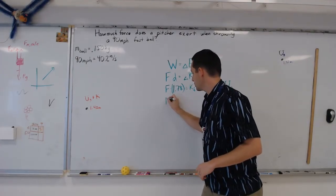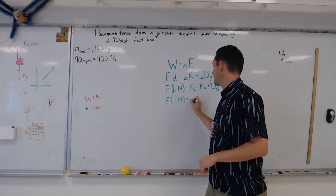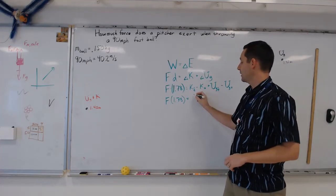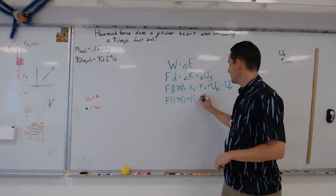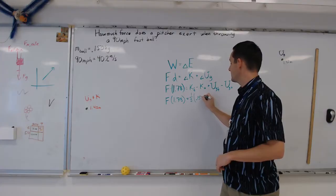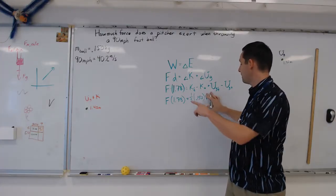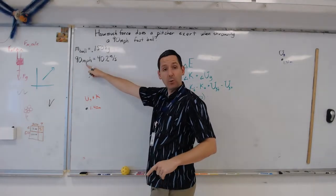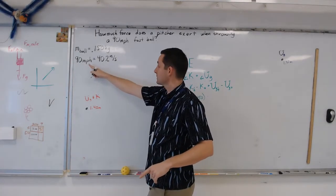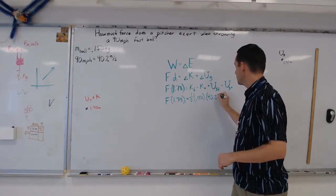We're getting really close. We go force times 1.78 equals kinetic energy final, which would be one-half times the mass, which was given to me. That's the 0.150 times V squared. And the final velocity is the velocity on the release, which we said we want to do a 90-mile-an-hour fastball. That's 40.2 meters per second.